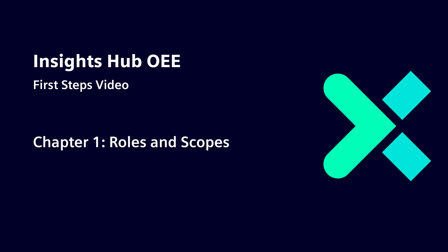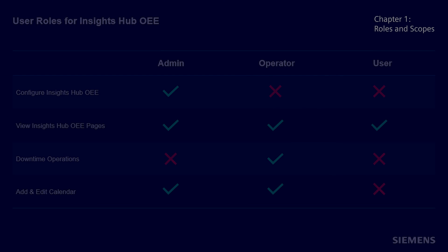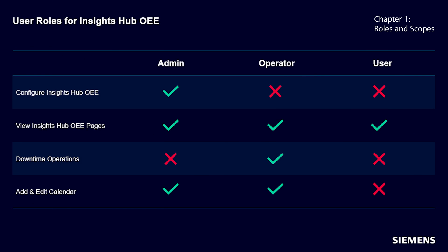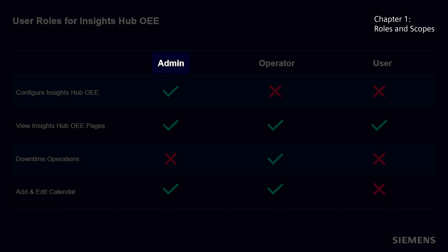Let's first start off with the roles and scopes. Generally, the application has three different roles: admin role, operator role, and user role.